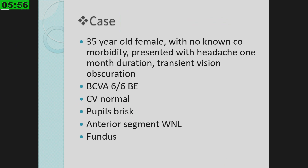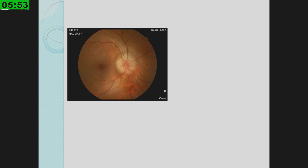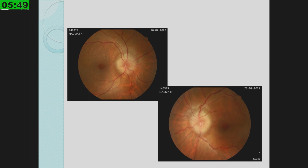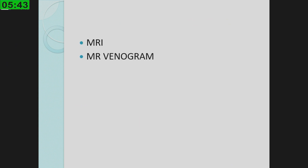Next case: similar scenario — patient presents with headache, optic nerve function normal, bilateral disc edema, but blood pressure was normal and dilated retinal assessment showed nothing new. I am suspecting papilledema — disc edema due to raised ICP. I sent for MRI and MR venogram; both came back normal. The neurologist proceeds to LP; CSF analysis was normal but CSF opening pressure was high, diagnosing idiopathic intracranial hypertension. I specifically mentioned MR venogram because dural sinus thrombosis can present in exactly the same manner and you don't want to miss that.